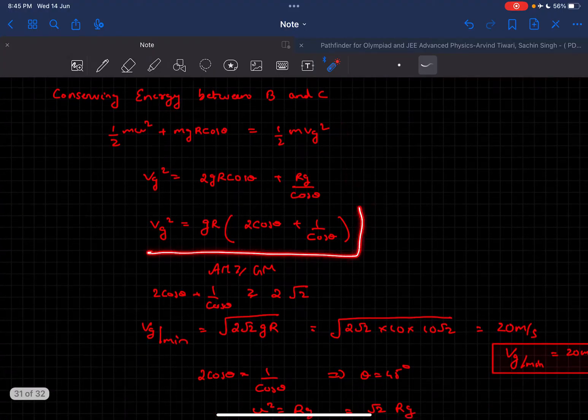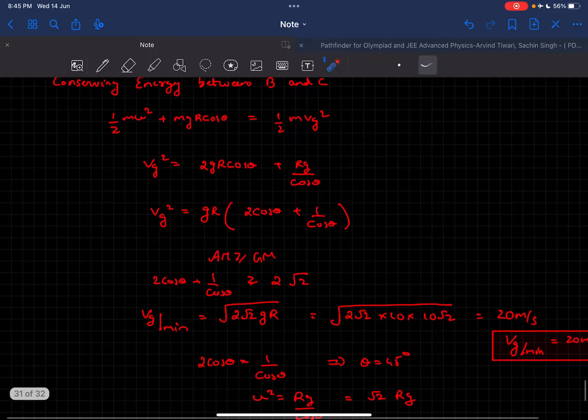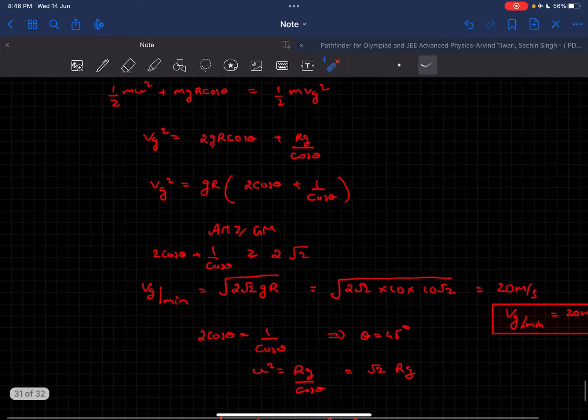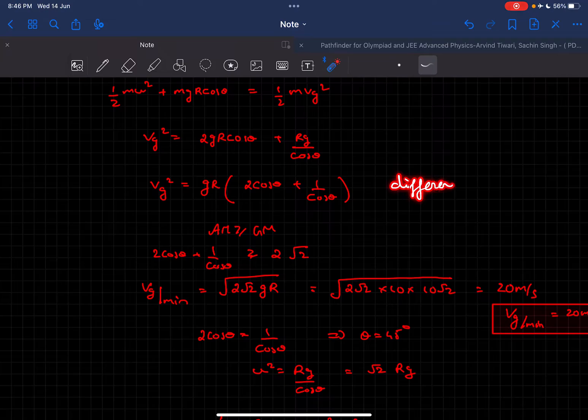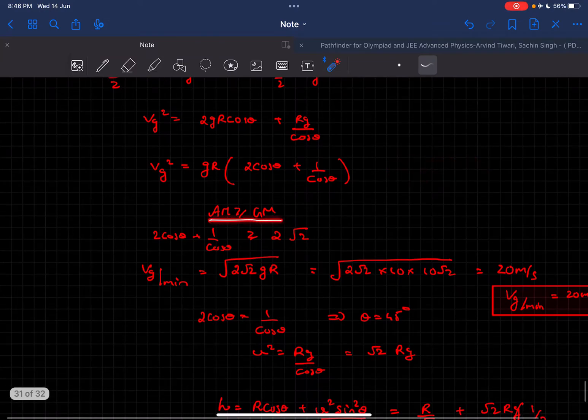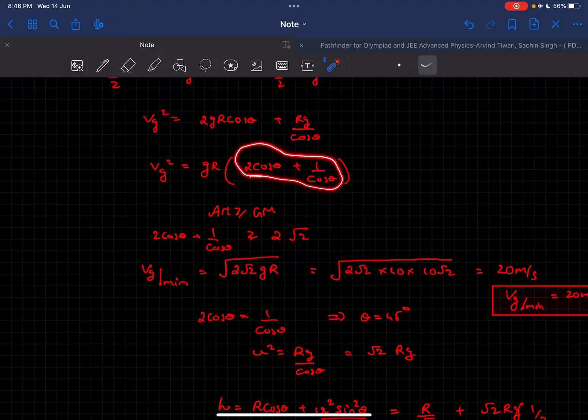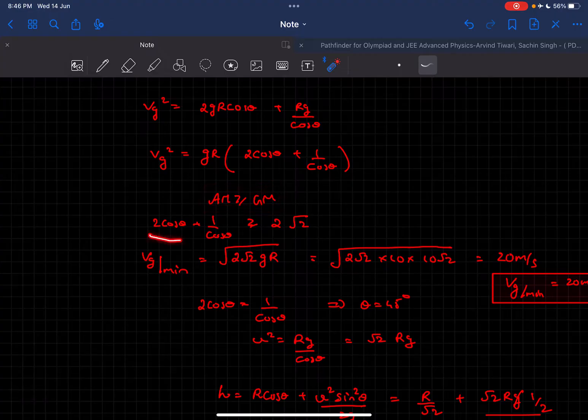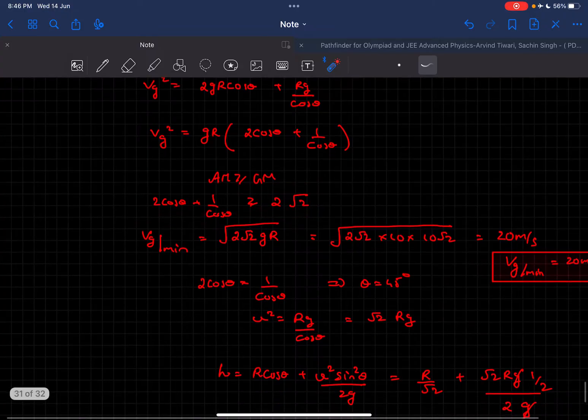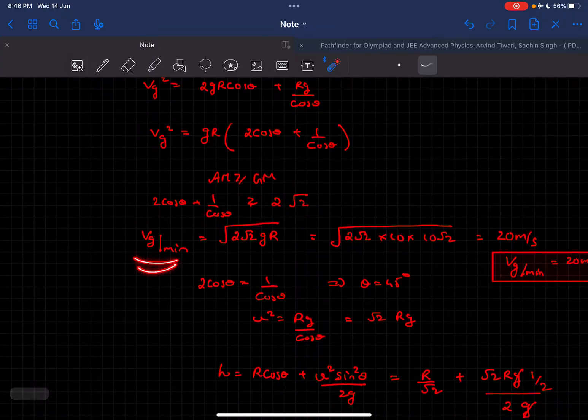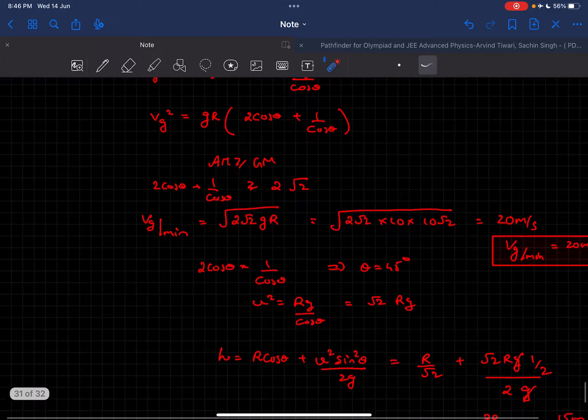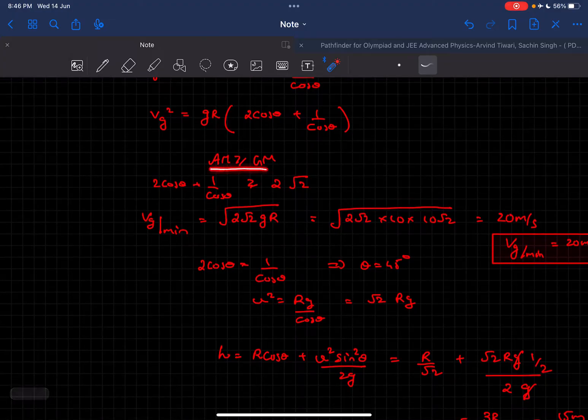After solving, we get vg as a function of theta. To find the minimum, we can use the AM-GM inequality. The geometric mean is √2, so using the AM-GM inequality, we get the minimum value of vg to be √(2√(2gR)), which equals 20 meters per second. The condition where AM equals GM